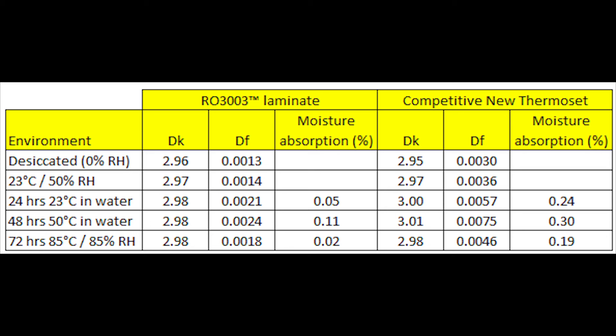A more realistic test is 85 degrees C at 85 percent RH, extended out to 72 hours. For RO3003, the dissipation factor difference is 0.0014 to 0.0018 — not that significant. In contrast, for the PPE-based material, the baseline dissipation factor is about 0.0036. After 24 hours of water submersion it goes up significantly to 0.0057, and after 48 hours at 50 degrees C water it goes to 0.0075 — pretty dramatic changes.